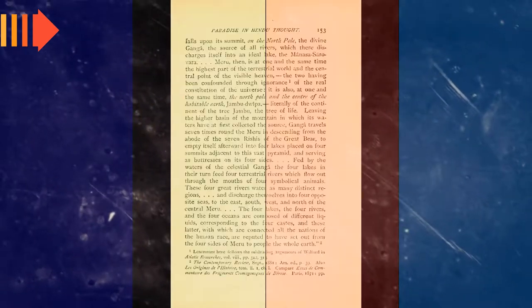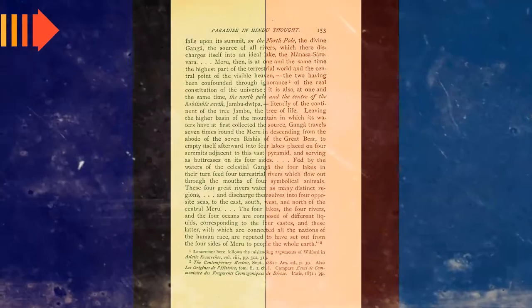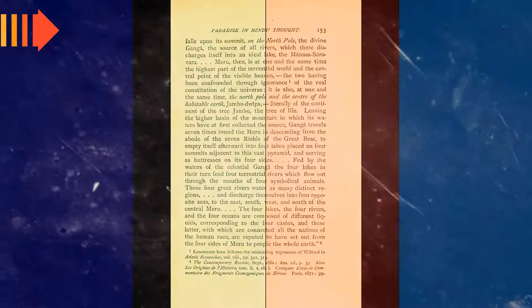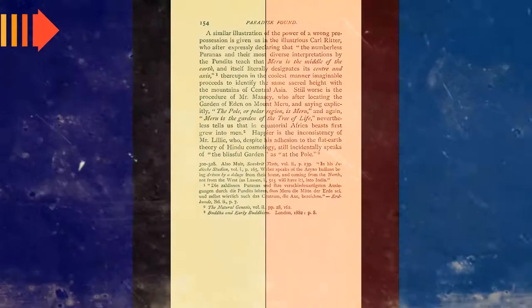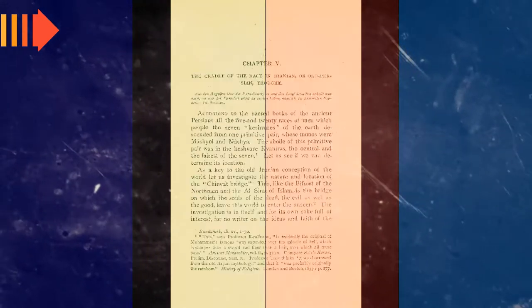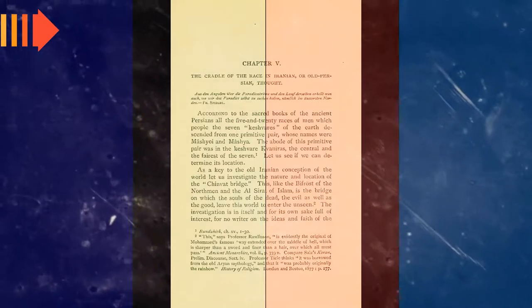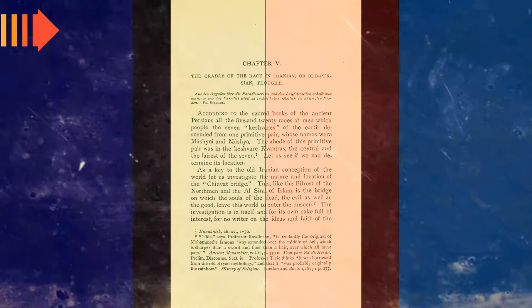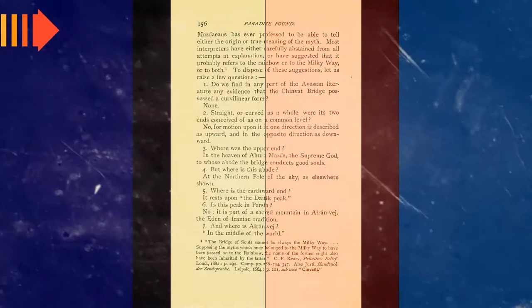John V. Luce notes that when Plato writes about the genealogy of Atlantis' kings, he writes in the same style as Hellanicus, suggesting a similarity between a fragment of Hellanicus' work and an account in the Critias.